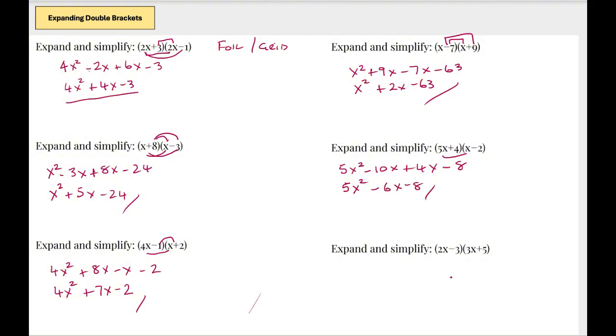And then finally, 2x times 3x is going to be 6x squared. 2x times 5 is going to be plus 10x. Minus 3 times 3x is going to be minus 9x. And minus 3 times 5 is minus 15. Sort it all out, simplify it, collect all your like terms. 10x minus 9x just gives us plus x, minus 15.